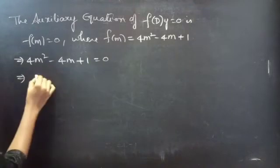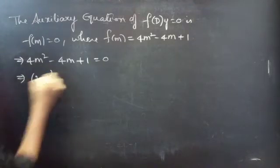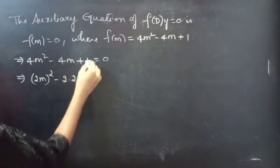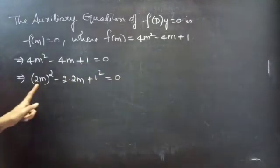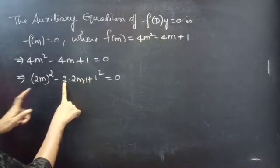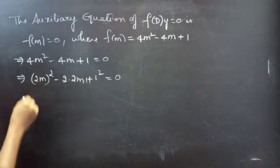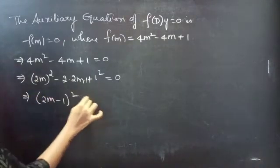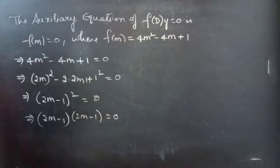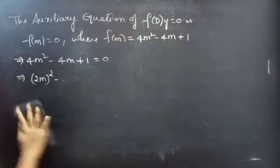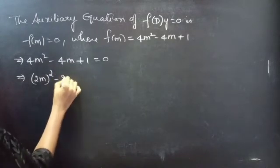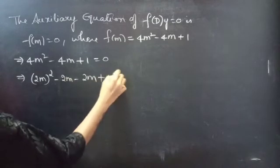Now you can write 4m² as (2m)², minus 2 times 2m times 1, plus 1² — which is an a² minus 2ab plus b² form. This gives (2m minus 1)² equals to 0, or 2m minus 1 into 2m minus 1 equals to 0. Alternatively, factorize by splitting minus 4m as minus 2m minus 2m, so: 4m² minus 2m minus 2m plus 1 equals to 0.